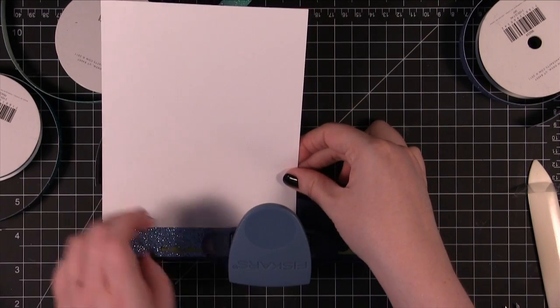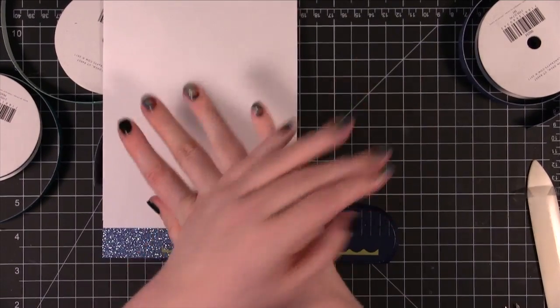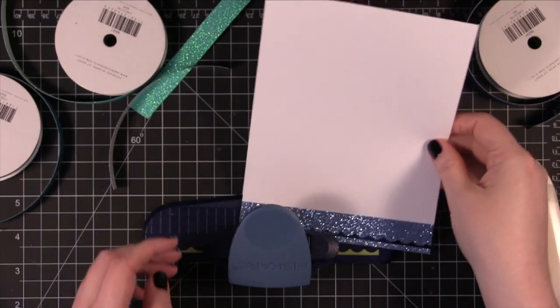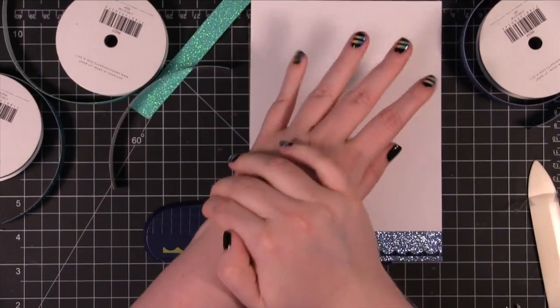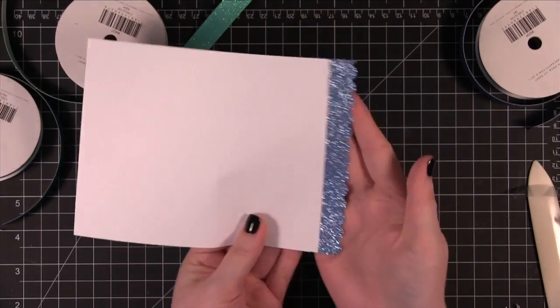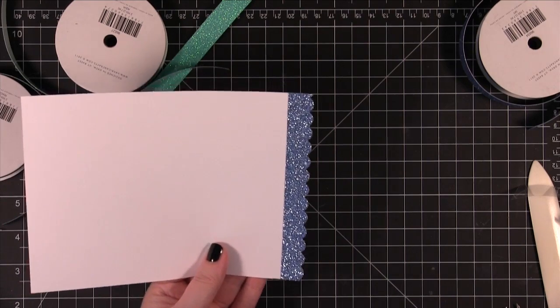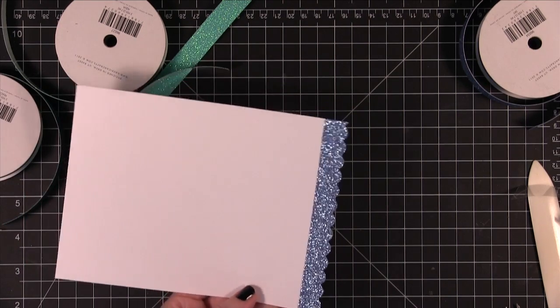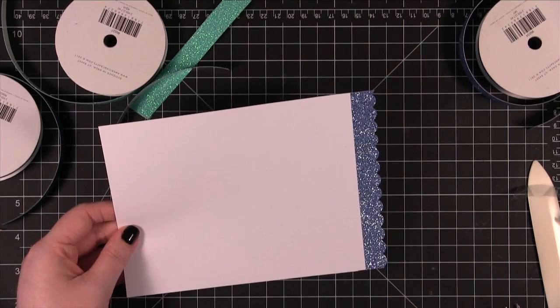You have to apply more pressure but it will still punch really well. Alright so now I have that edge. You guys can see that. So I'm just going to cut off this edge and then I'll move on to the next color. I'm going to keep doing that with some different edge punches and then I'll show you how I put it all together.